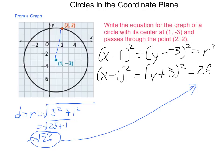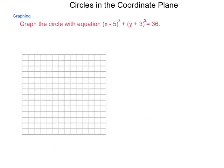Next, what happens if we're given an equation? How do we draw the graph? So, we need to graph the circle with the equation (x - 5)² + (y + 3)² = 36.